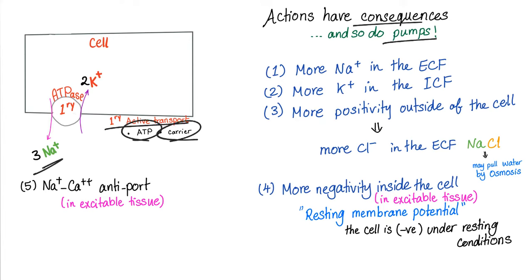Concentration of any solute such as sodium chloride is measured in mg per liter — amount divided by volume. Concentration of an electrolyte such as sodium (a positive ion) is measured in milliequivalent per liter. Milliequivalent is an amount; liter is a volume — again, amount over volume. We use milliequivalent rather than milligrams because electrolytes have different chemical properties. One milliequivalent equals the equivalent of one milligram of hydrogen.